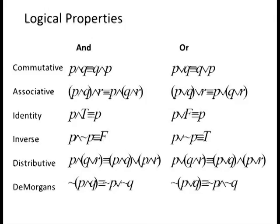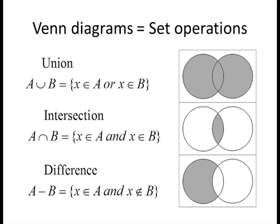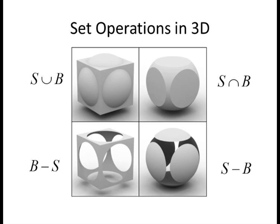However, it was John Venn who gave us a geometric model for these set operations in the form of Venn diagrams. Modern modeling systems extend this idea using volumes instead of area to represent sets, allowing us to use the concept of Boolean operators in three dimensions.